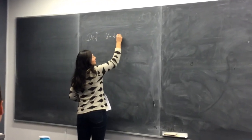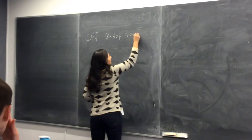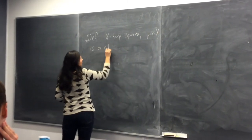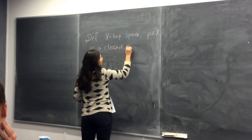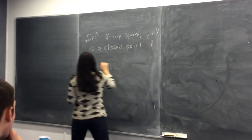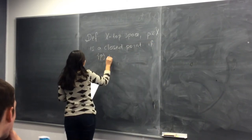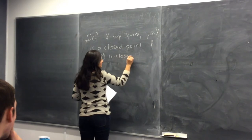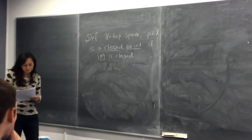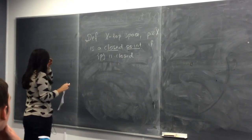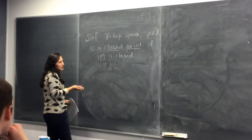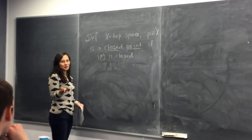I'll start with the definition. X is a topological space, P in X is a closed point if its singleton is closed.